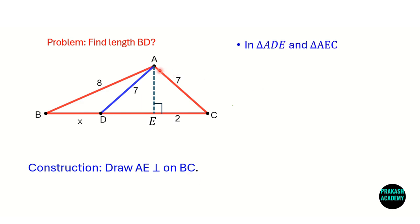Now let us consider two triangles: the first one is triangle ADE, and the second is triangle AEC. If you consider these two triangles, AD is equal to AC, and both are equal to 7 units.